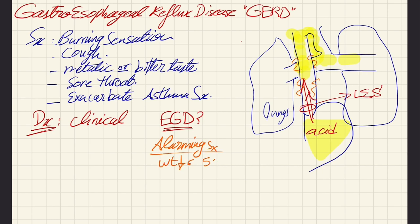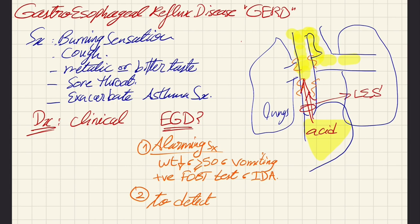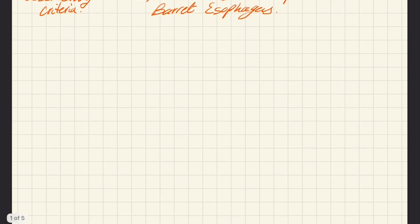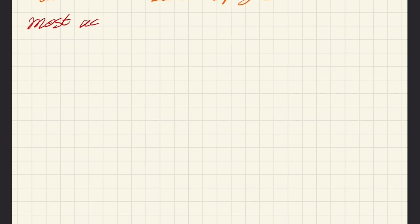The diagnosis is clinical initially. However, we always do EGD whenever we see alarming symptoms: weight loss, age more than 50, vomiting, positive FOBT test, iron deficiency anemia, and melena. EGD is also done to detect GERD complications like Barrett's esophagus. There are certain criteria we use to screen patients with GERD for Barrett's.